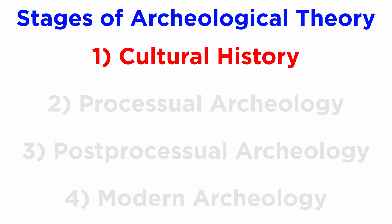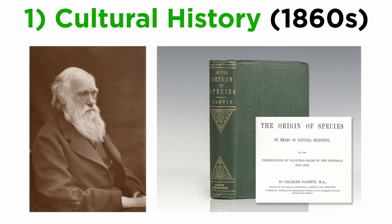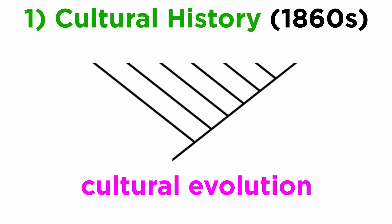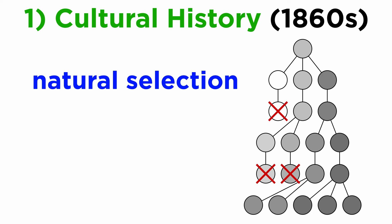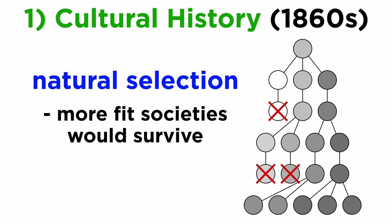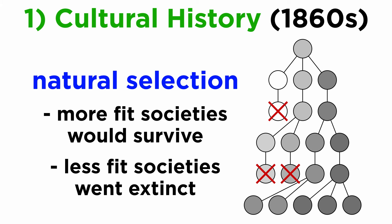The first stage of archaeological theory is called cultural history. Starting in the 1860s, the theory had a great deal of influence from Darwinian evolution. Cultural evolution was established as a concept from this influence, including the idea that human cultures evolve similarly to organisms. Selection played a part in this concept — more fit societies survived, and less fit societies went extinct.